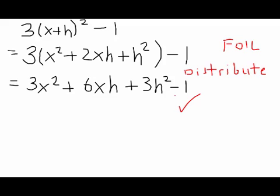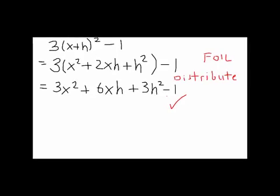(x+h)² means multiply x+h times itself, and that involves foiling. So (x+h)(x+h) gives me x² + 2xh + h², then we distribute the 3 to get 3x² + 6xh + 3h², and don't forget, we have to subtract 1 from the end. So that's the expression, that's f(x+h) for 3x² - 1.